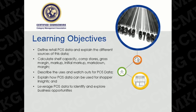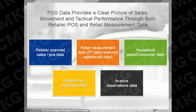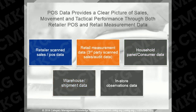Retail point of sale data is the most valuable data source in category management and allows for many different types of analysis for in-depth category understanding. Point of sale data is the key data source required in category management. Both retailer scanned POS data and retailer measurement data from third parties are derived from scanned point of sale data. Both are often referred to simply as POS data, however they are distinctly different data sets. Together, these two variations of POS data are the primary data sources for category management work.